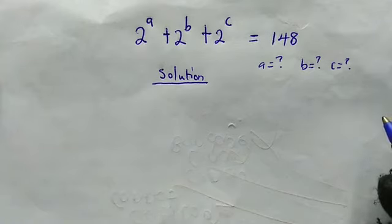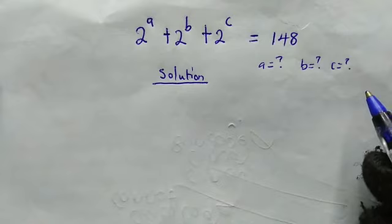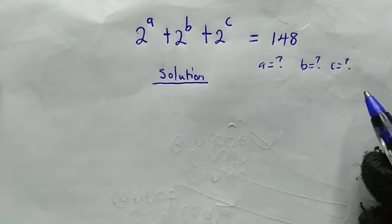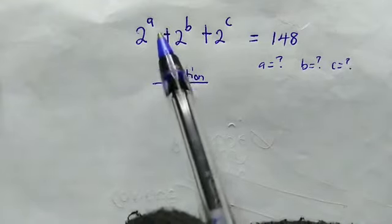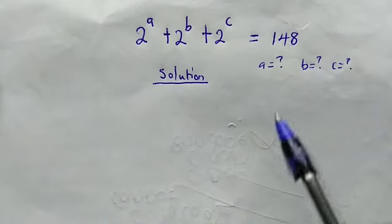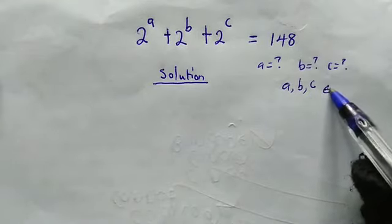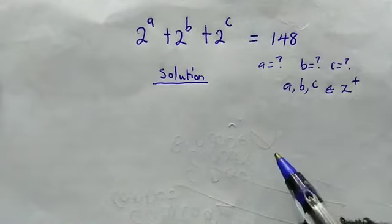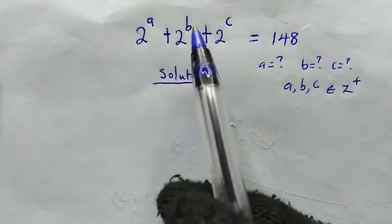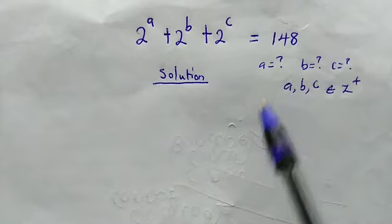Hello, good viewers. Welcome back once again. In today's video, we are going to solve the following Diophantine equation. A Diophantine equation is just a single equation involving two or more different variables. Here we have A, B, and C, and we're going to solve for their integer values, where A, B, and C are positive integers. The equation is: 2 to the power of A plus 2 to the power of B plus 2 to the power of C equals 148.